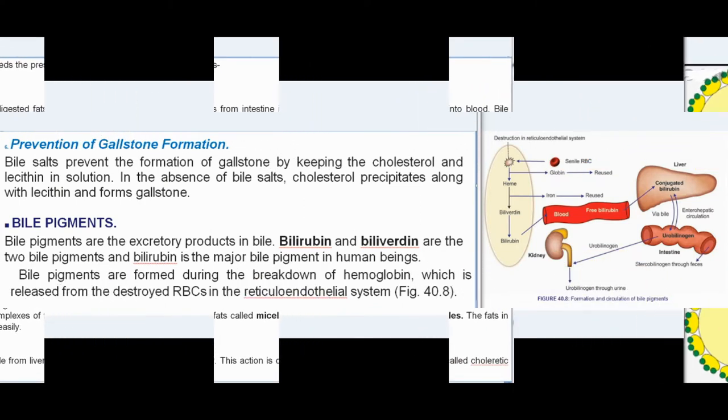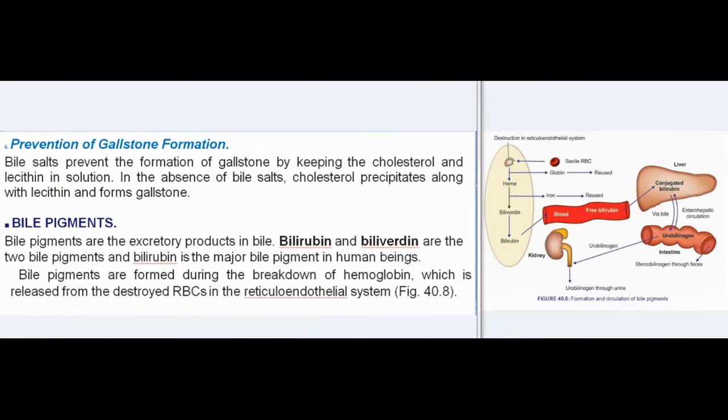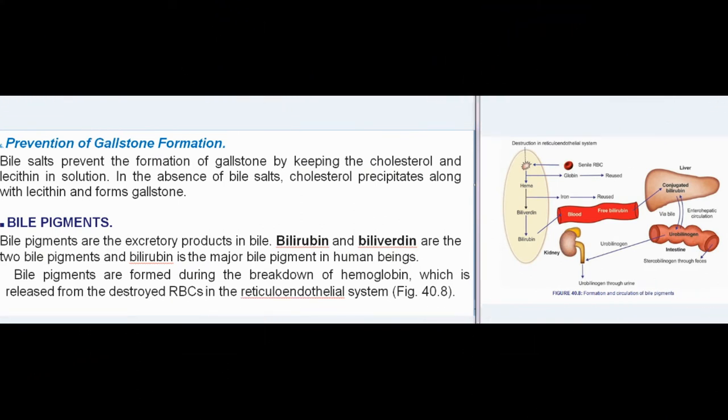Cholagogue action: a cholagogue is an agent which causes contraction of the gallbladder and release of bile into the intestine. Bile salts act as cholagogues indirectly by stimulating the secretion of the hormone cholecystokinin, which causes contraction of the gallbladder and release of bile. Laxative action: bile salts act as laxatives by stimulating peristaltic movements of the intestine. Bile salts also prevent gallstone formation by keeping cholesterol and lecithin in solution; in their absence, cholesterol precipitates with lecithin and forms gallstones.